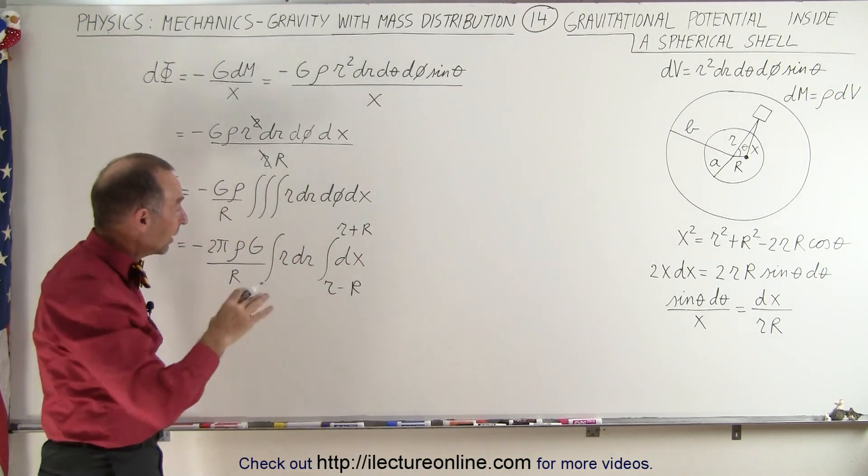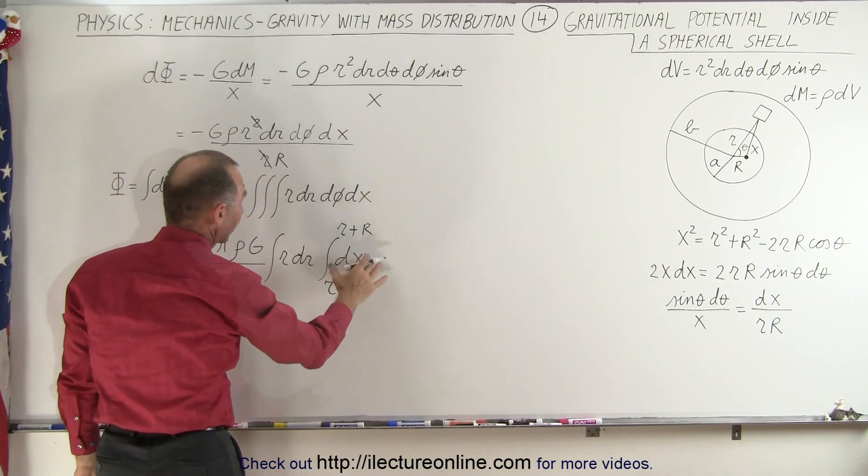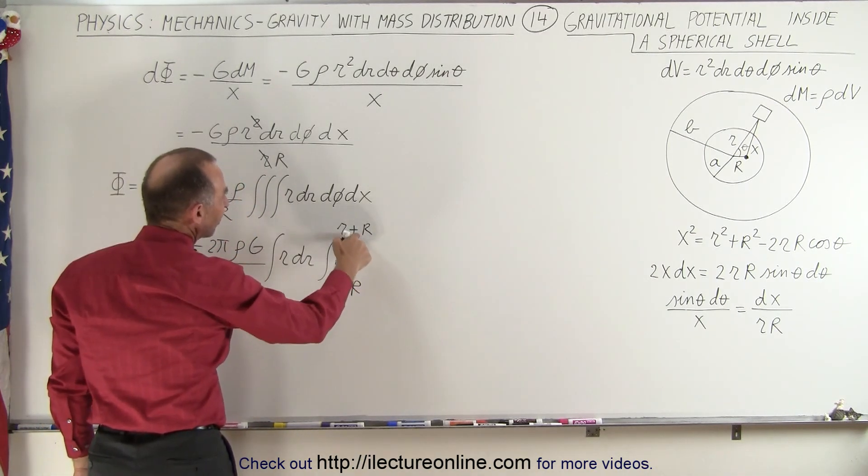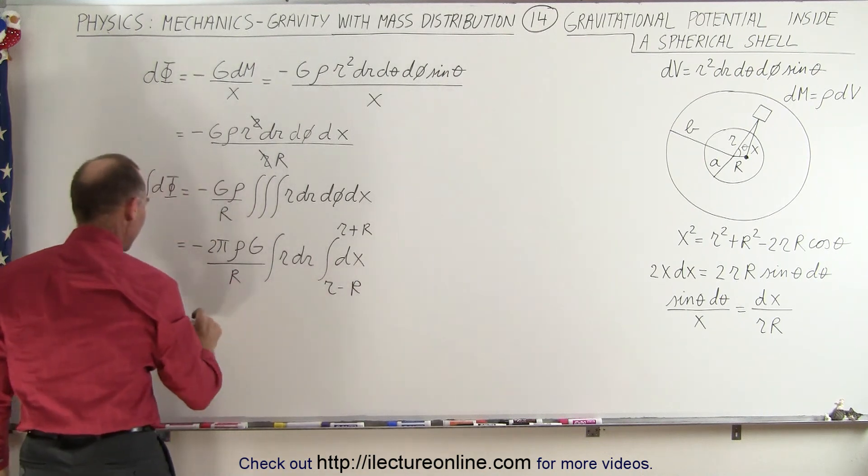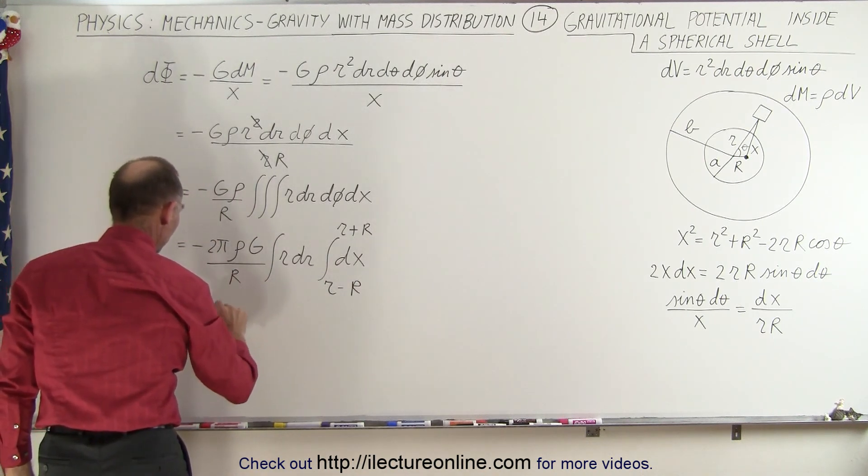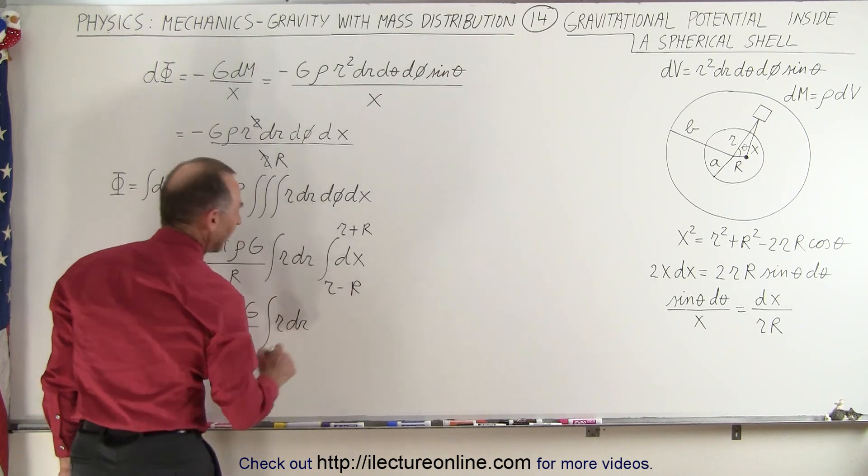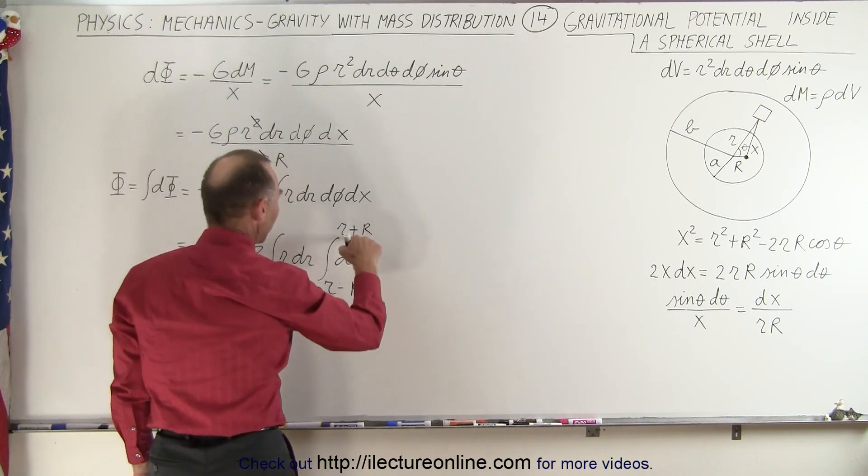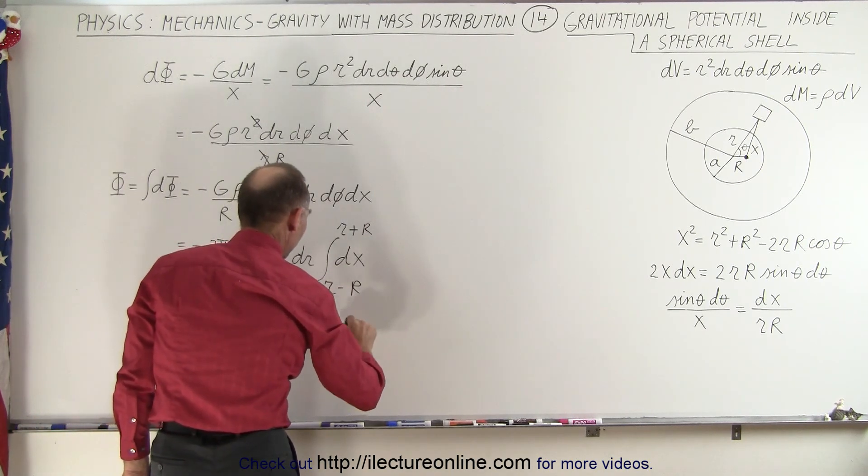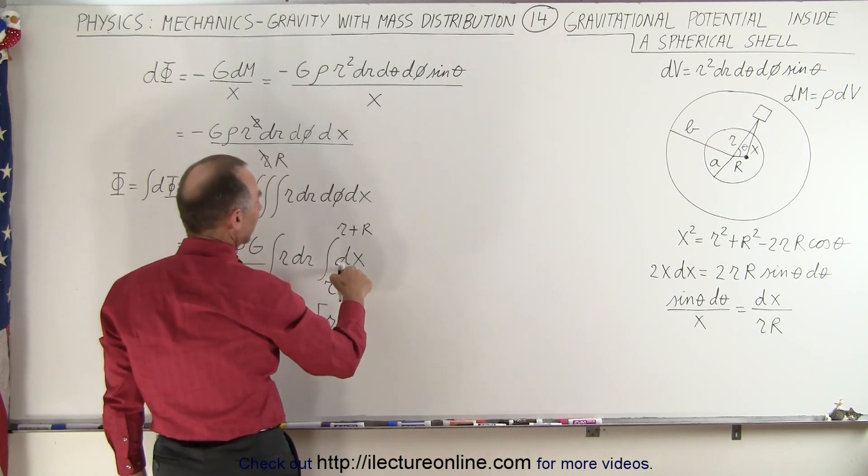So now we can go ahead and integrate over dx, that becomes x. We substitute the upper and the lower limits to get the following. So this is minus 2 pi, and here this becomes the upper limit, which is r plus big R,